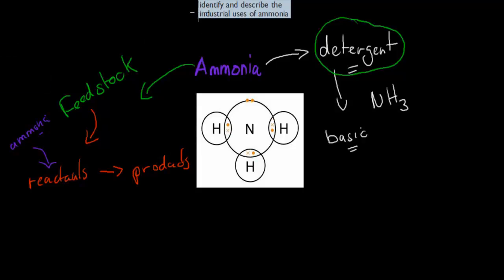The reason why I mention all this is because the dot point itself says identify and describe the industrial use of ammonia. So one general use, which I just mentioned, was the detergent. Now this is usually not industrial, it's often used in home environments or generally to clean stuff, but there are other industrial uses which we'll go over now.